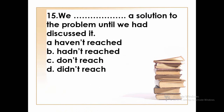Number fifteen: 'We __ a solution to the problem until we had discussed it.' The options are: haven't reached, hadn't reached, don't reach, or didn't reach. 'Until' is followed by past perfect — 'had' plus past participle. Before it, the verb must be in the past simple and in the negative form. So the answer is 'didn't reach'.